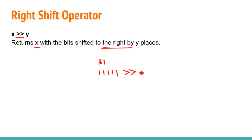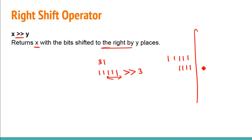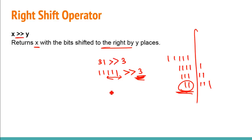Say you have to do a right shift by 3. Think of it like a wall — you shift three bits to the right, so the rightmost three bits fall off. You're left with 11, which is equal to 3 in decimal. So 31 >> 3 gives you 3.